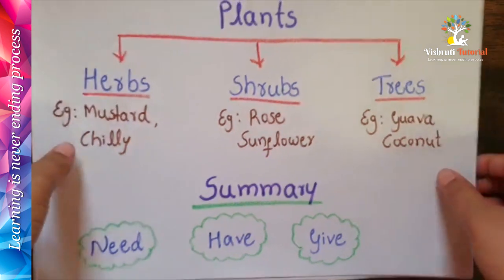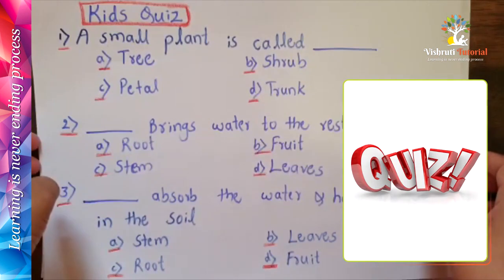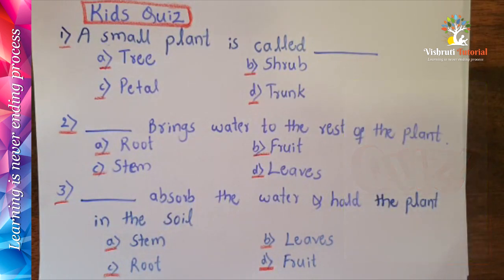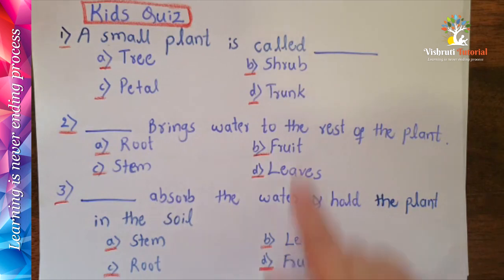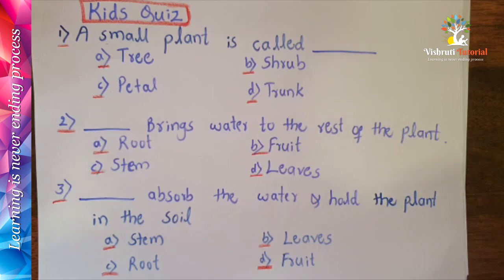Let's have a quick quiz! First question: a small plant is called — options: tree, shrub, petal, or trunk. The answer is shrub. Second question: what brings water to the rest of the plant — options: root, fruit, stem, or leaves. The answer is stem.